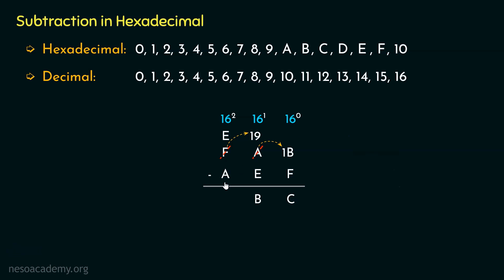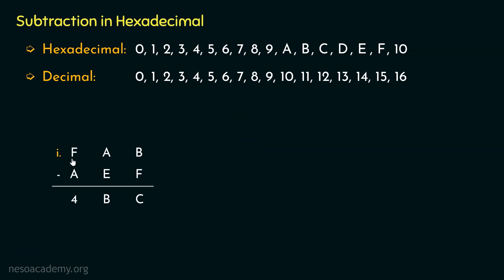Focus on the last unit — the most significant digit's place. The minuend digit is E and the subtrahend is A. E in hexadecimal is 14 in decimal, and A is 10 in decimal. 14 minus 10 gives us 4. So the result of FAB minus AEF is 4BC. Remember: in hexadecimal, whenever we borrow, we borrow 10, which is 16 in decimal.